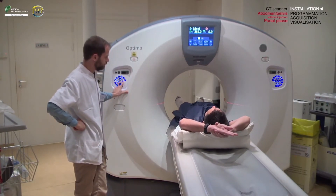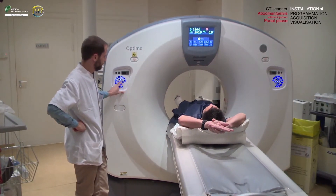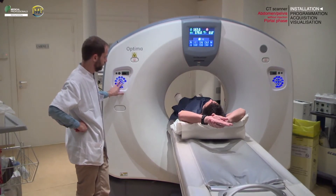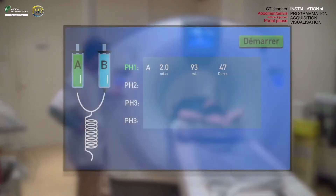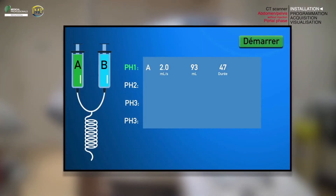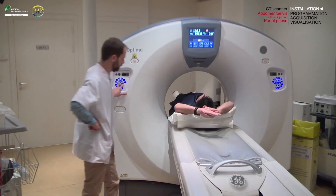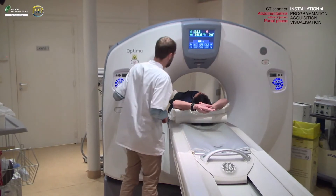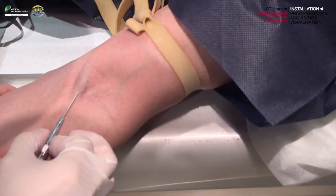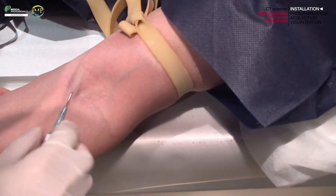You can also place a leg elevation pillow under the patient's knees. Before continuing, prepare an injector with iodinated contrast media with a concentration of 300 milligrams per milliliter. In all cases, refer to your department's injection protocols. This exam will require an intravenous infusion.